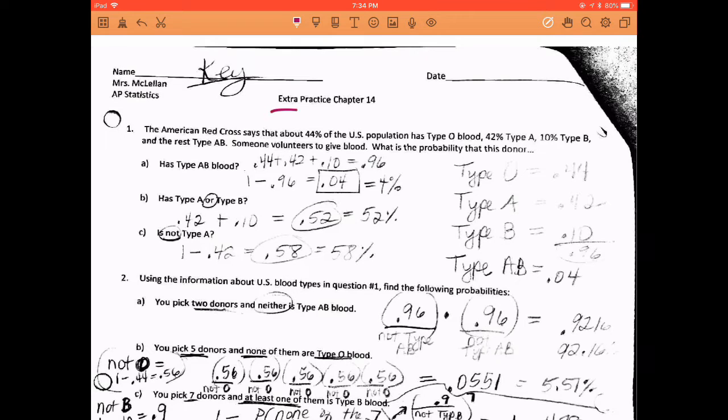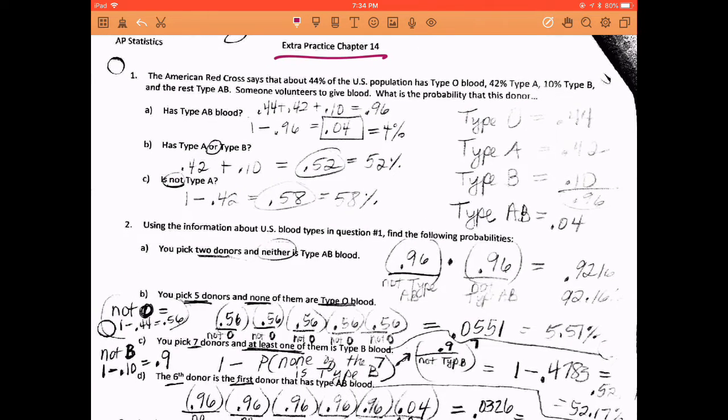Alright, we're going to go ahead and go over the extra practice for chapter 14. Let's take a look at this first one. It's talking about the different blood types. We have 44% type O, 42% type A, 10% type B, and the rest are AB.